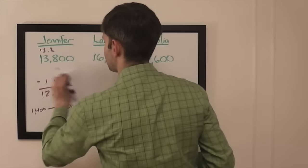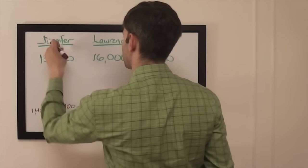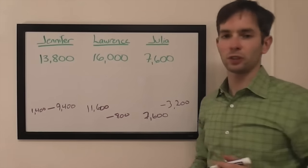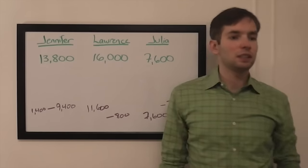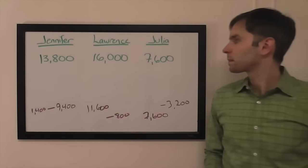If Lawrence wants to shut out Julia he can wager up to 800. That's only if he doesn't like the category and he just wants to hope that Jennifer misses, because Jennifer and Lawrence are close enough that she can easily cover a zero wager or an unsafe wager by him.